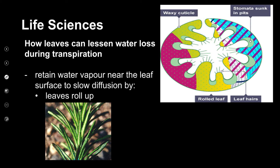The third example is leaves that roll themselves up to try and keep the water vapour inside them. Looking at this picture, this plant has several of these methods: namely the hairs, the sunken stomata, and the fact that it is rolled up. This plant would survive in a dry environment because it's not going to lose too much water.